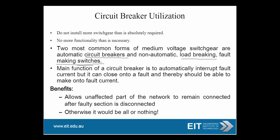The main function of a circuit breaker is to automatically interrupt fault current, but it can also close onto a fault and should therefore be able to make onto fault current. You might wonder why it needs to close onto a fault. You might assume the fault is cleared and turn on the breaker, but the fault might still be present. If the breaker is not rated to withstand closing onto a fault, it could get damaged. So a breaker must have the capacity to close onto a fault as well.